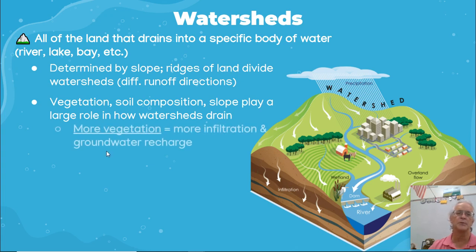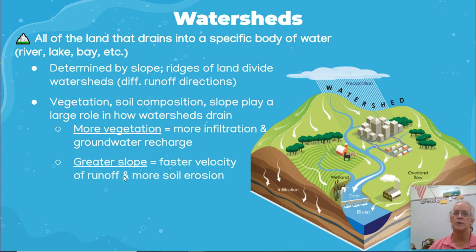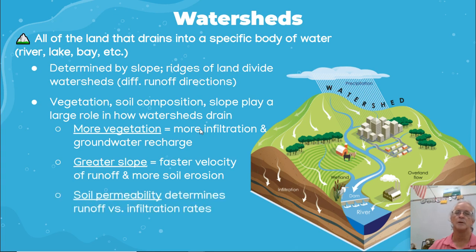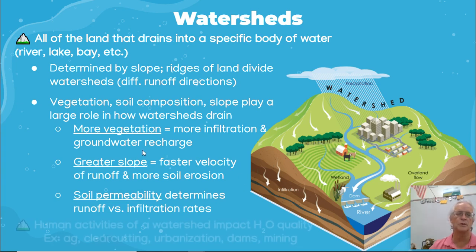For example, the more vegetation — like here — the more infiltration and groundwater; it's going to go down into the ground much better. Soil permeability — remember, how big the holes are in the ground — determines the runoff and infiltration rates, meaning how much water is going to go down to the groundwater.